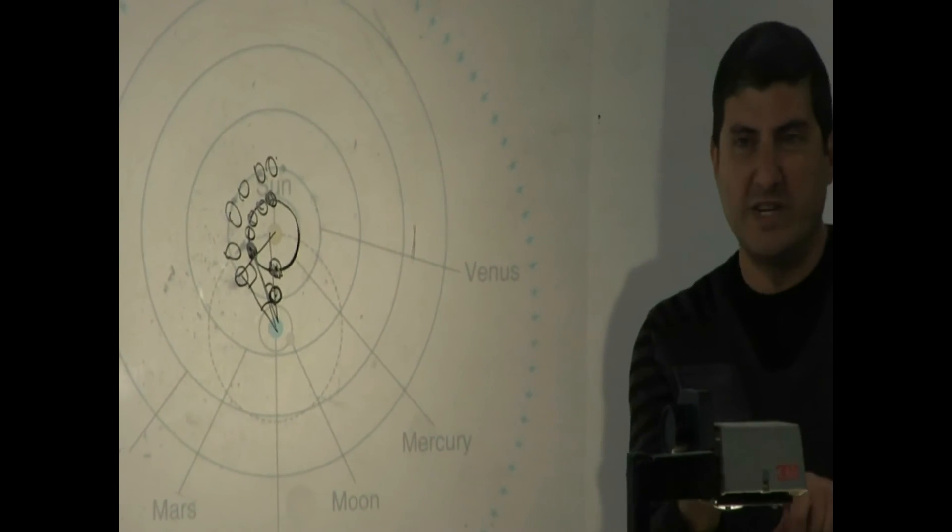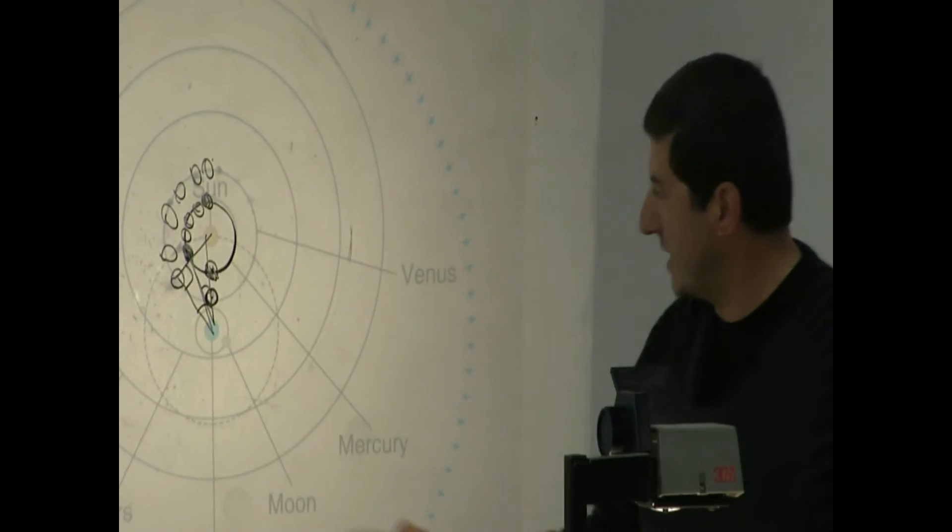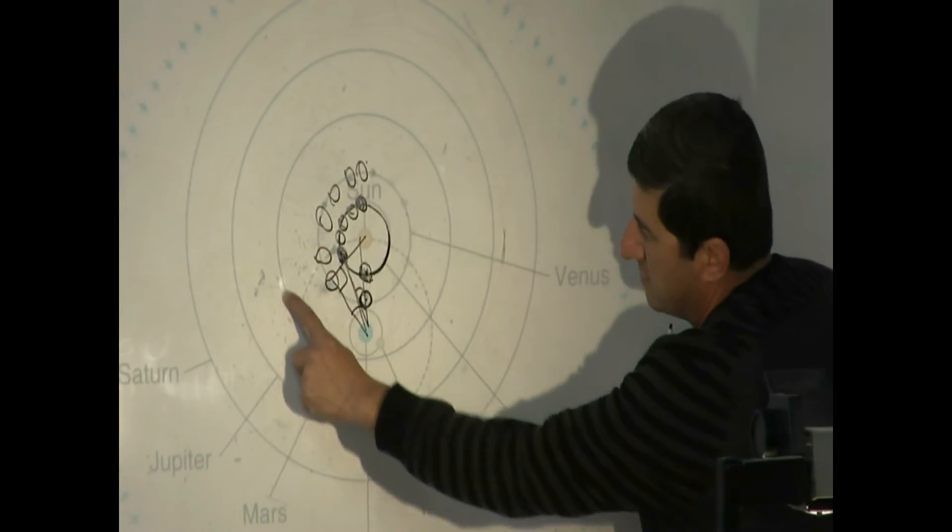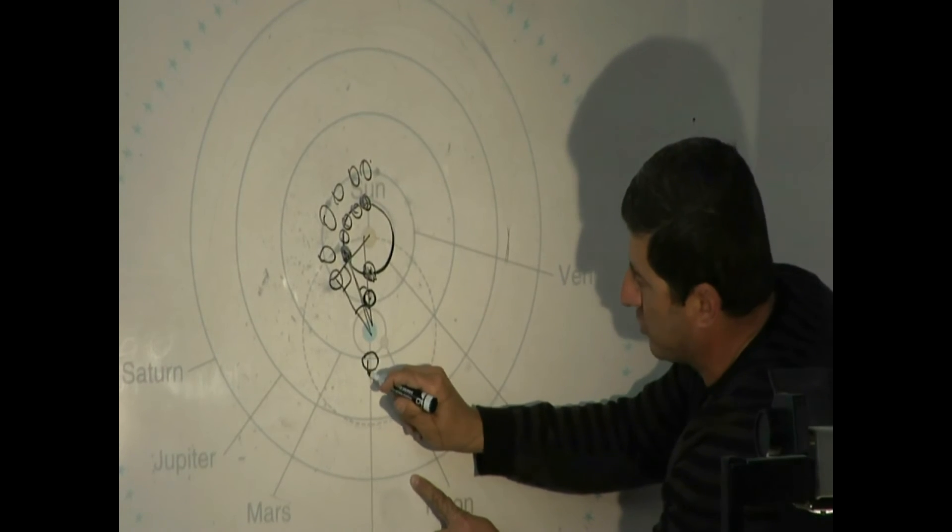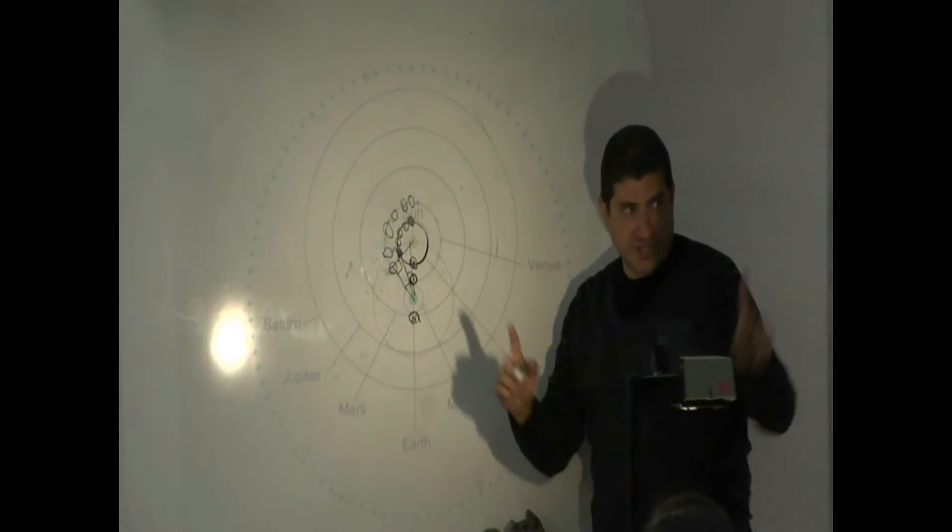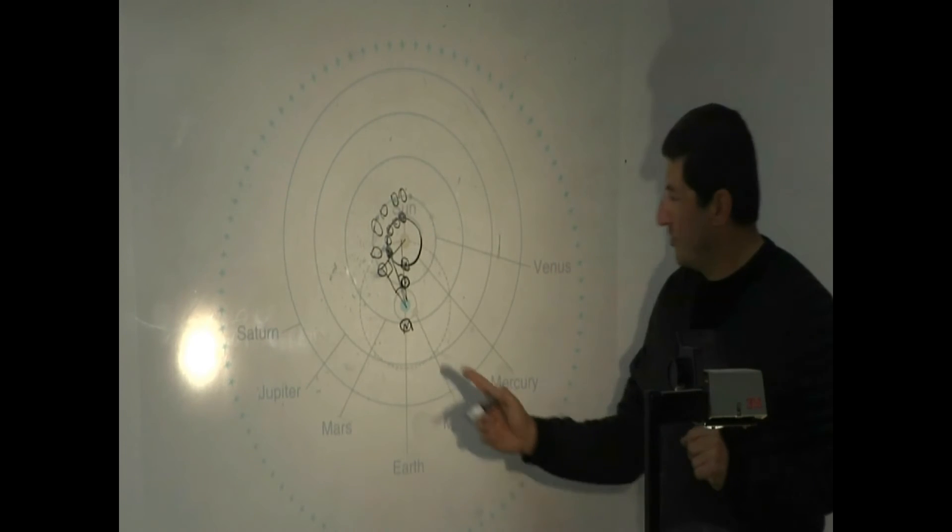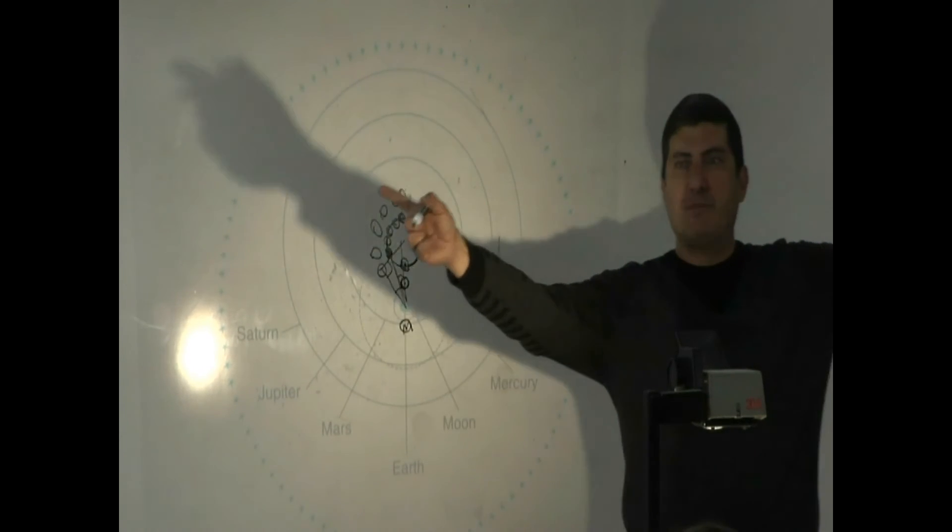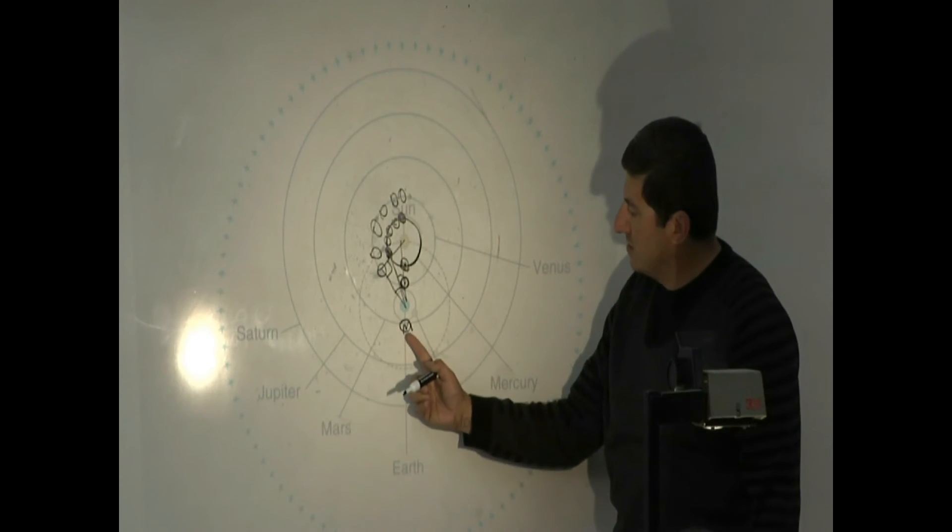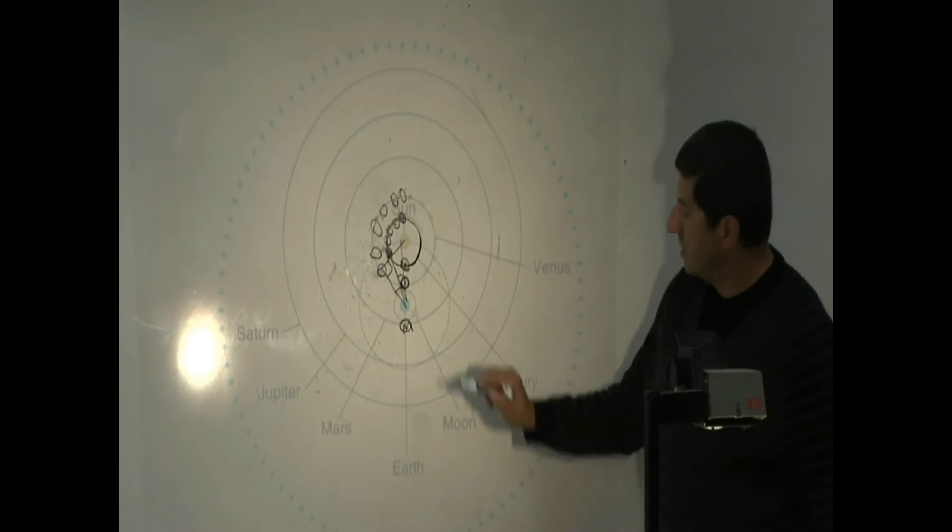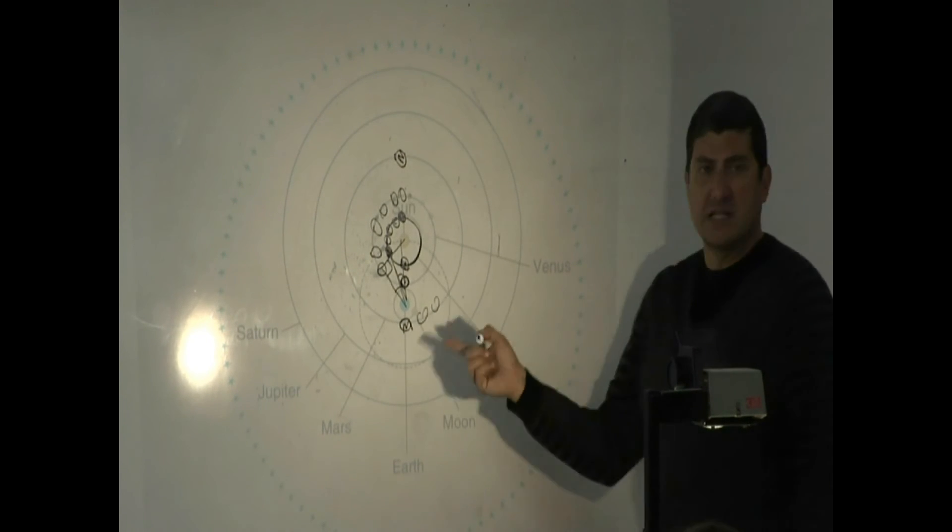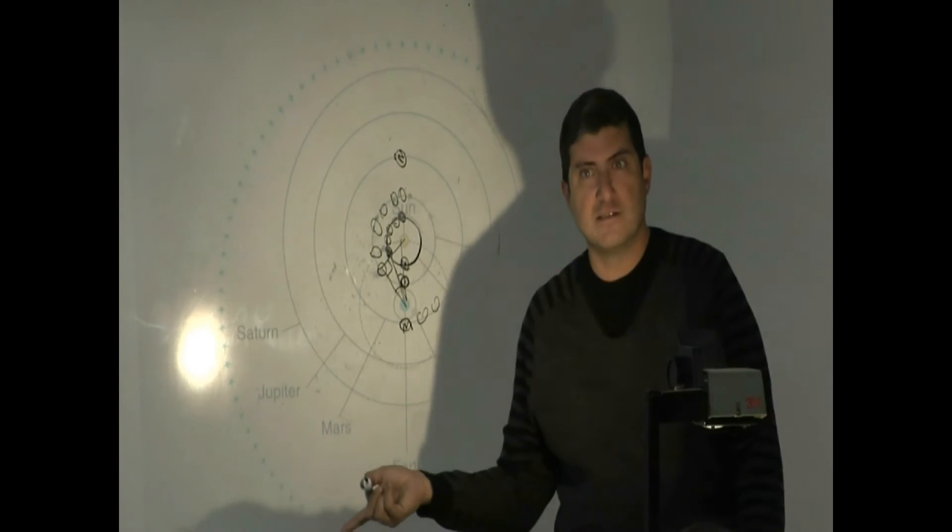So Mercury and Venus can only be in inferior conjunction and superior conjunction. Look at Mars. Look, you see how big he makes Mars' orbit? This is Mars. So when Mars is here, what position is that called? Starts with O. Opposition. So he knows. He's not stupid, you know. He knows that Mars sometimes rises opposite of the sun. So he makes Mars' orbit big enough so that Mars is opposite to the sun. So he accounts for opposition. And then Mars can be, of course, in this position, which is superior conjunction. So it kind of looks like the Copernican model. Not too much different.